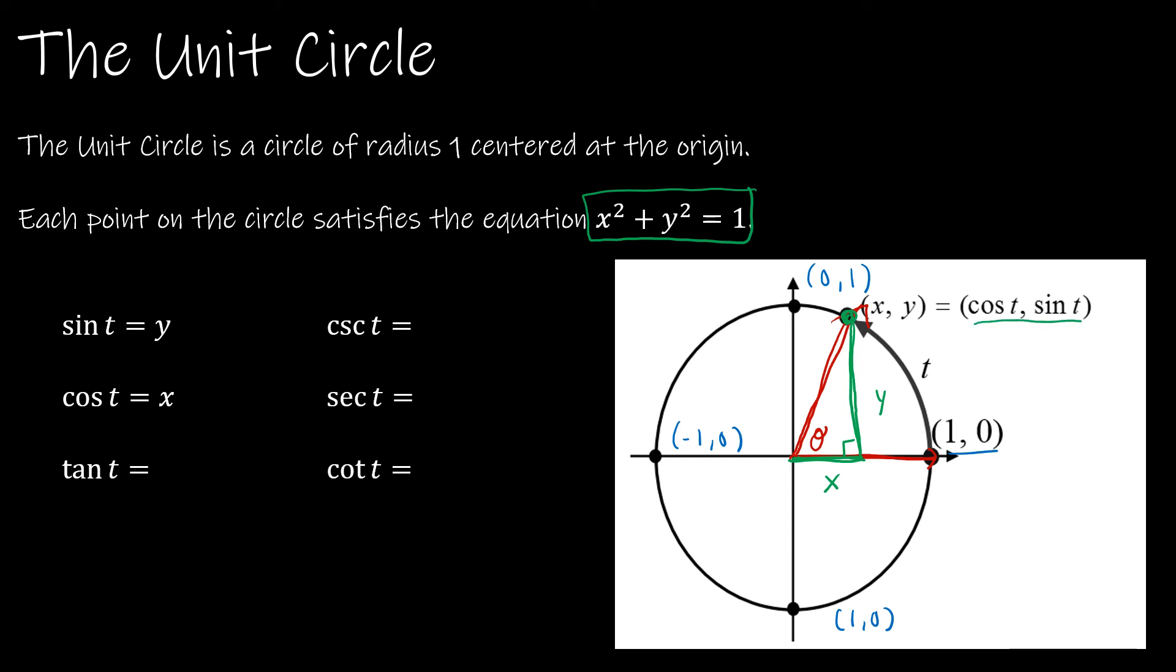So I have that that's cosine t comma sine t, or in this case, because I've used theta, it would be cosine theta sine theta. But I haven't really explained that yet, so let's talk about why that is true.